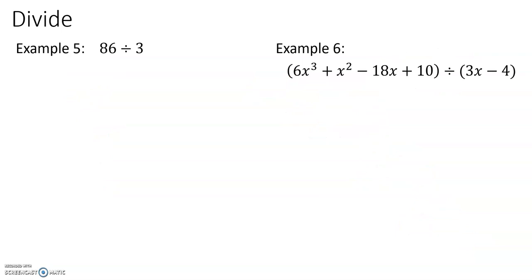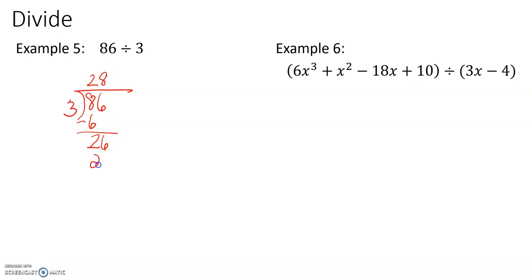Example 5: 86 divided by 3. Again, let's do our long division. 3 multiplies into 8 two times — 2 times 3 is 6, and there are 2 left over. Bring down the 6; 3 times 8 is 24, so 26 minus 24 is 2. Our answer is 28 and 2 thirds. We are not writing 'r' for remainder — we're writing 28 and 2 thirds.